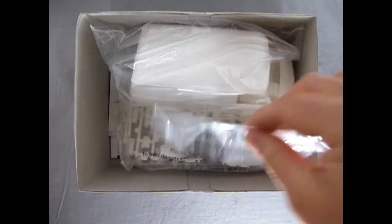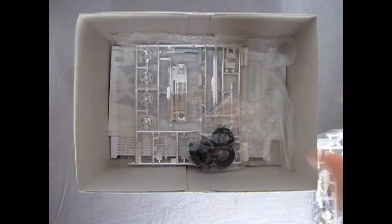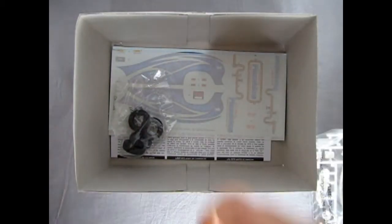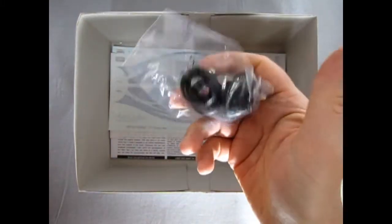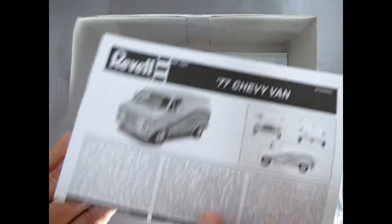So here we have some nice clear glass that's bagged and will prevent it from getting scratched as well as our van and all the components for it. Down here we have this wonderful chrome tree and then we've got our funky tires right here and our decal sheet and underneath the decal sheet is our instructions.